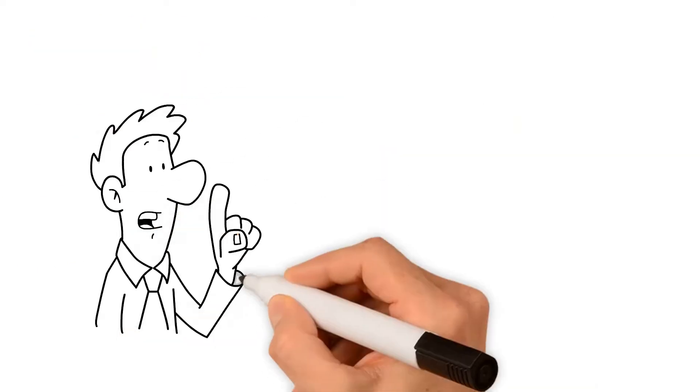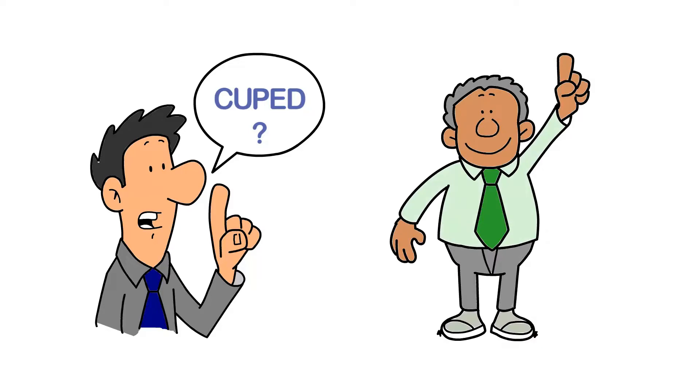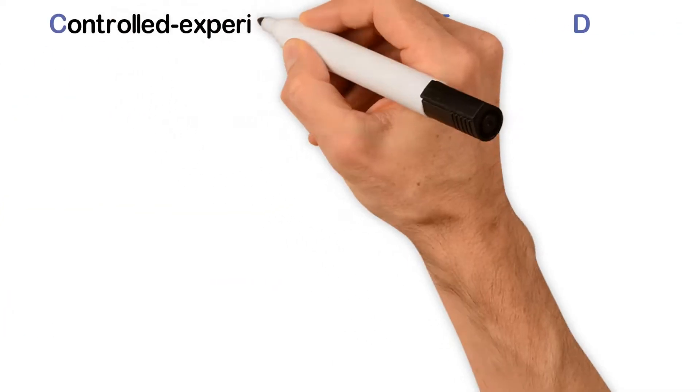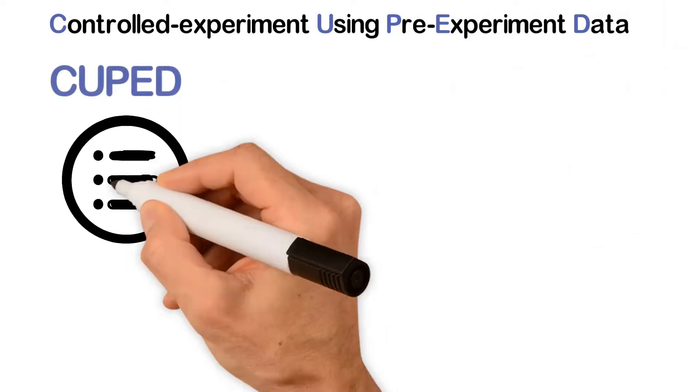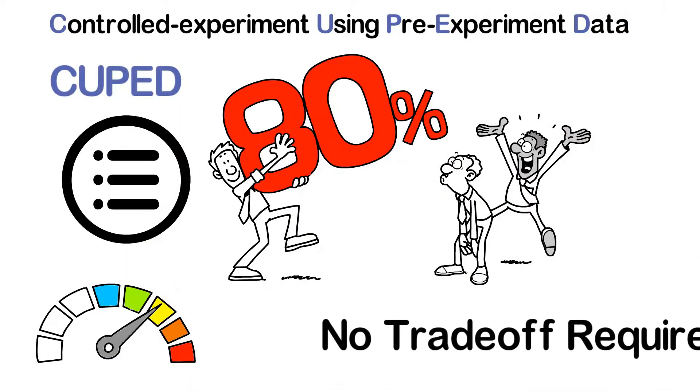But what is CUPID? Let us explain. Short for Controlled-Experiment Using Pre-Experiment Data, CUPID is a method to speed up experiments with no trade-off required.